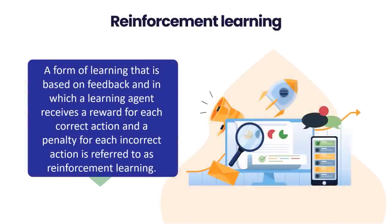Now we will discuss reinforcement learning. A form of learning that is based on feedback, in which a learning agent receives a reward for each correct action and a penalty for each incorrect action, is referred to as reinforcement learning. The performance of the agent is enhanced as a result of the automatic learning that occurs from this feedback. During reinforcement learning, the agent engages with its surroundings and investigates them. The greatest reward points possible should be obtained by an agent, leading to an increase in its overall performance. One illustration of reinforcement learning is the robotic dog, which will automatically learn how to move its arms.